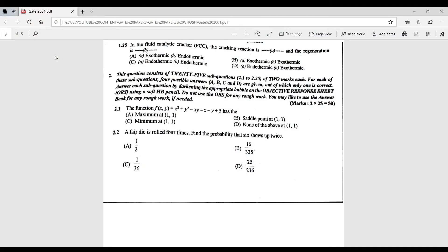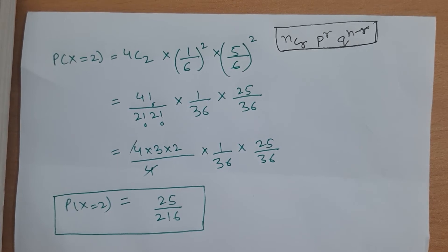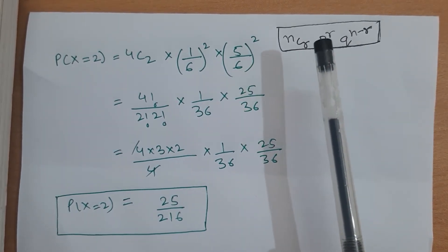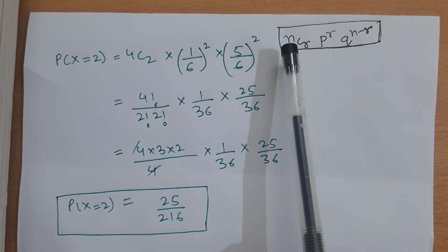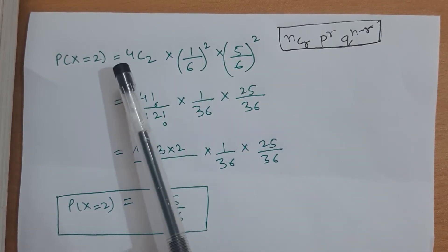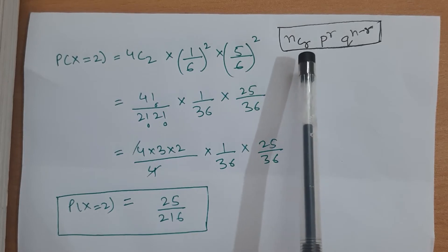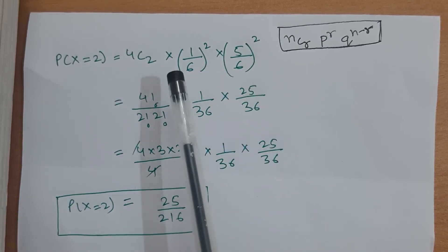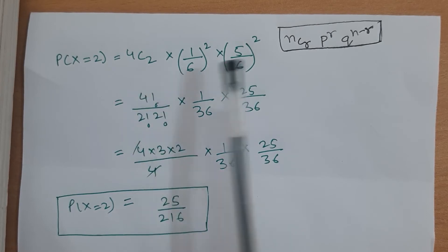Question 2.2: a fair die is rolled 4 times. Find the probability that 6 shows up exactly twice. This is solved using the binomial distribution formula: P = nCr · pʳ · q^(n−r), where n is the number of trials (4), r is the required number of successes (2, since we need 6 to appear twice).